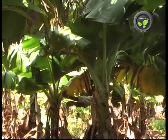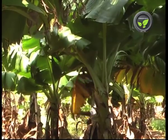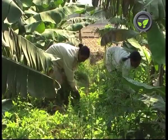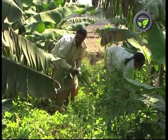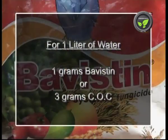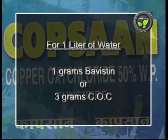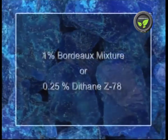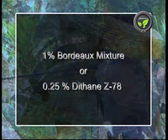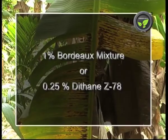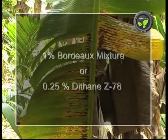Cut off the infected leaves and burn. Avoid excess irrigation and poor drainage. Keep the weeds under control. Spray the leaves with a solution of 1 gram Bavistein or 3 grams of COC in 1 litre of water. Bordeaux mixture of 1% or Dithane Z78 solution of 0.25% is also effective.